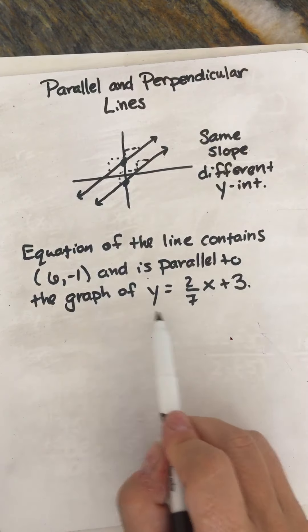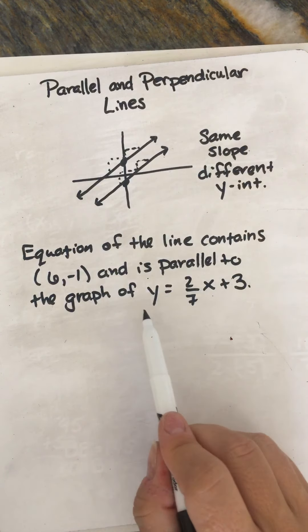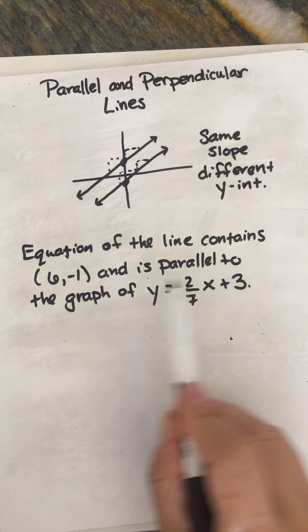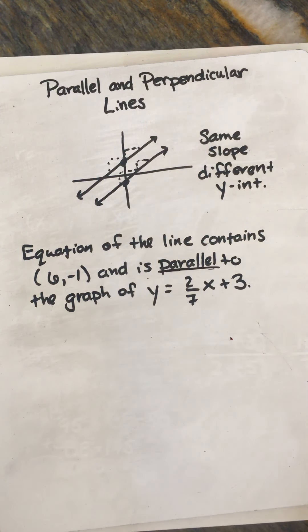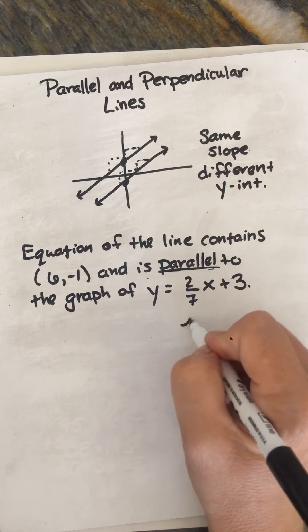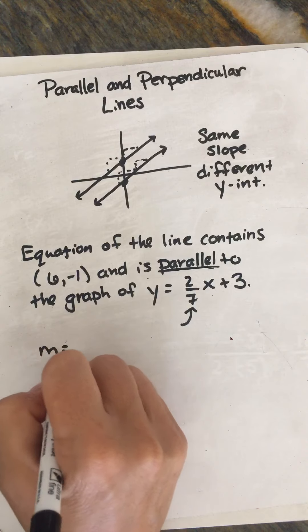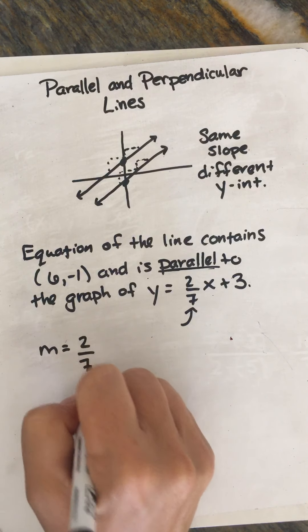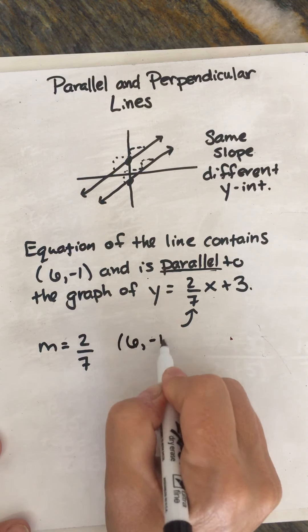So what is the important piece of information that we can glean from this equation here? If we're looking to write the equation of a parallel line, we need the slope. So our slope for our new line will be 2/7, and it's going to contain or go through the point (6, -1).